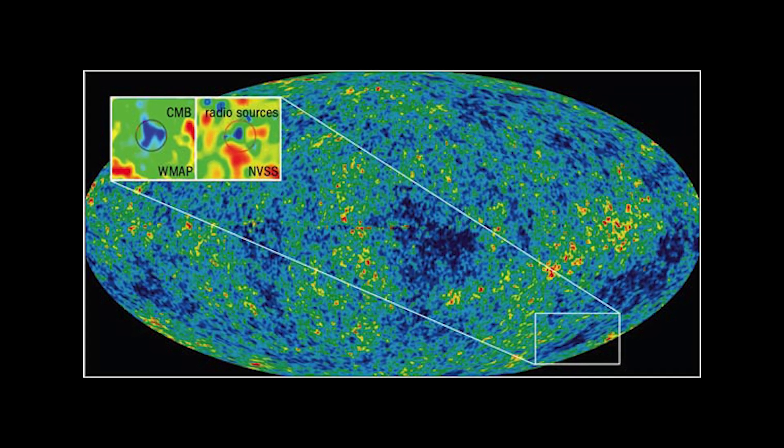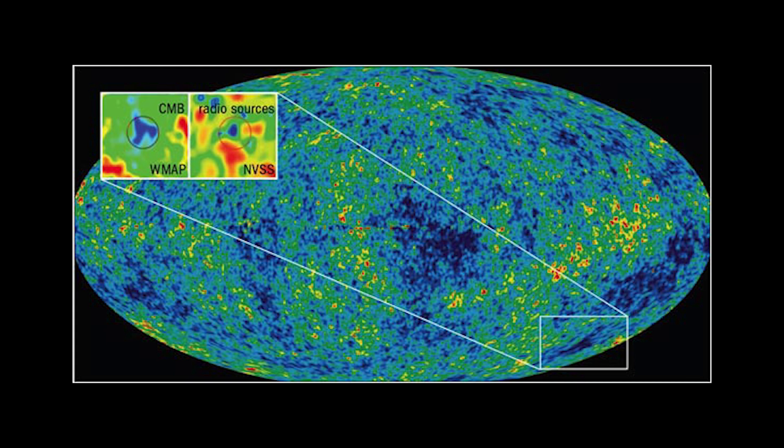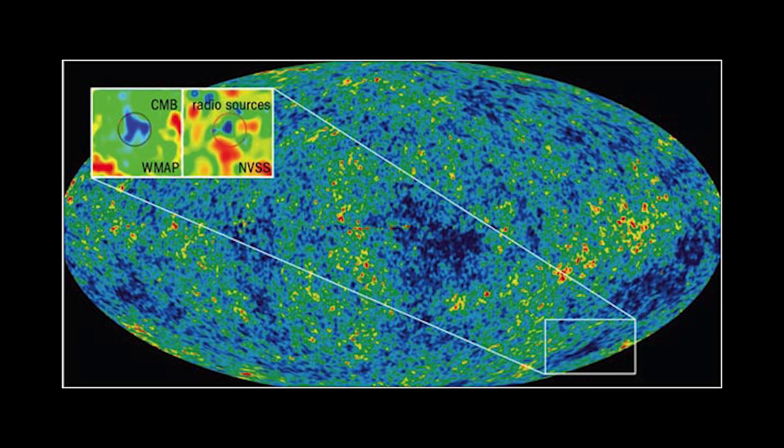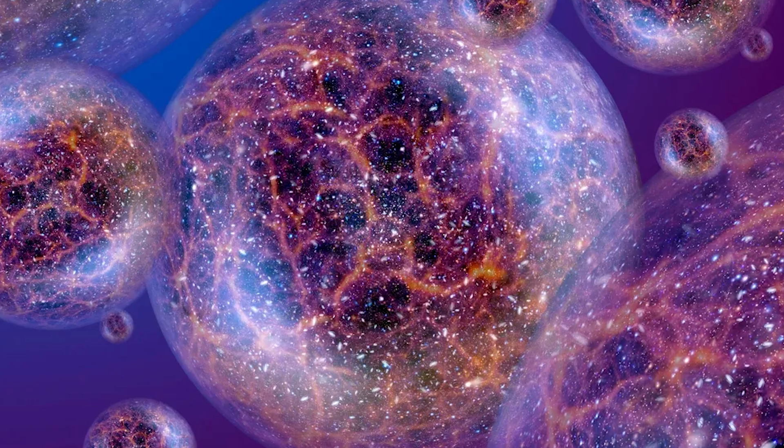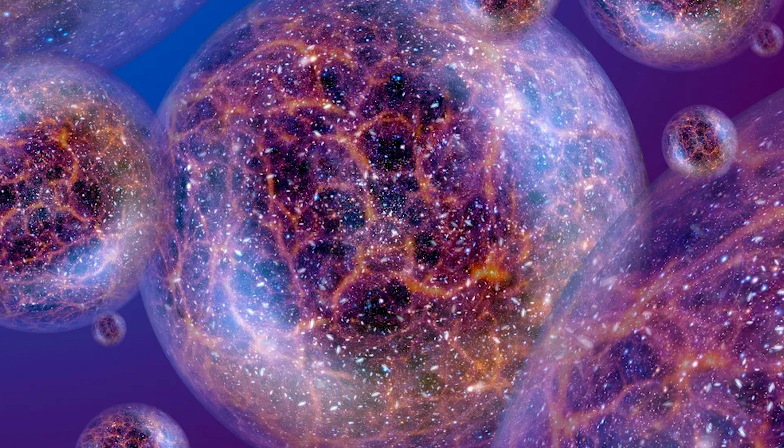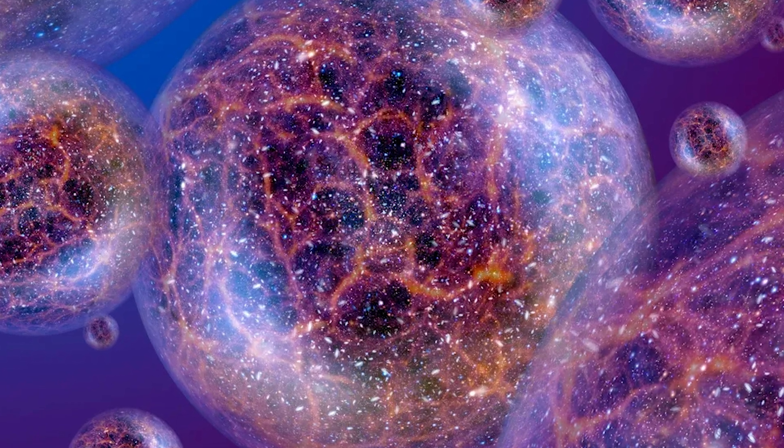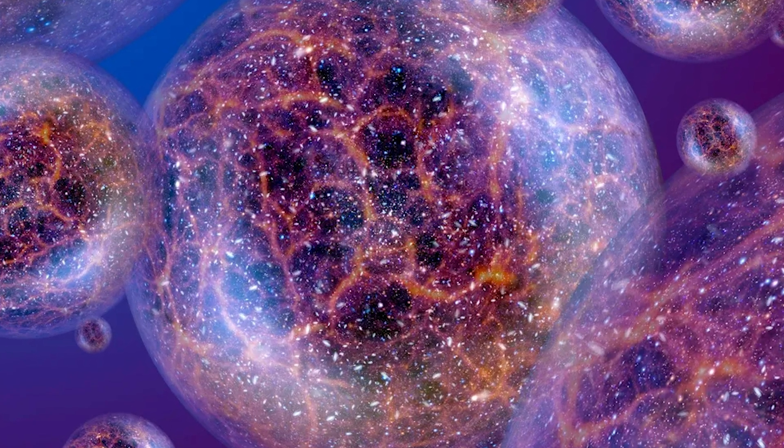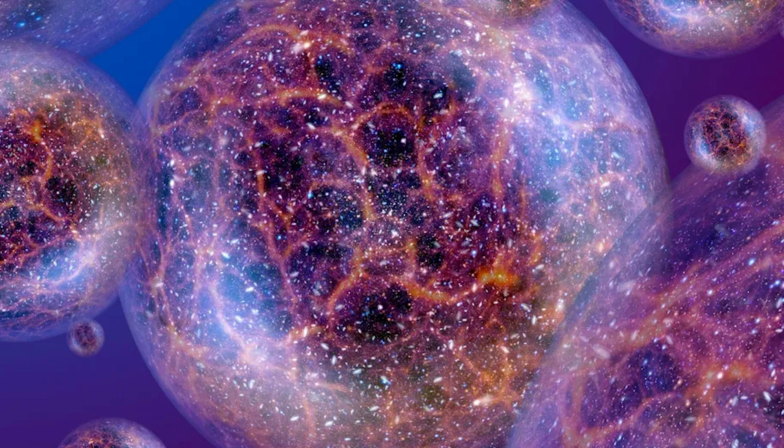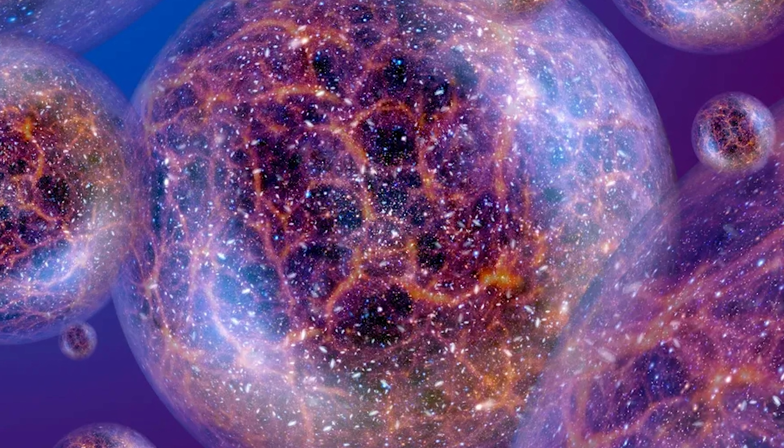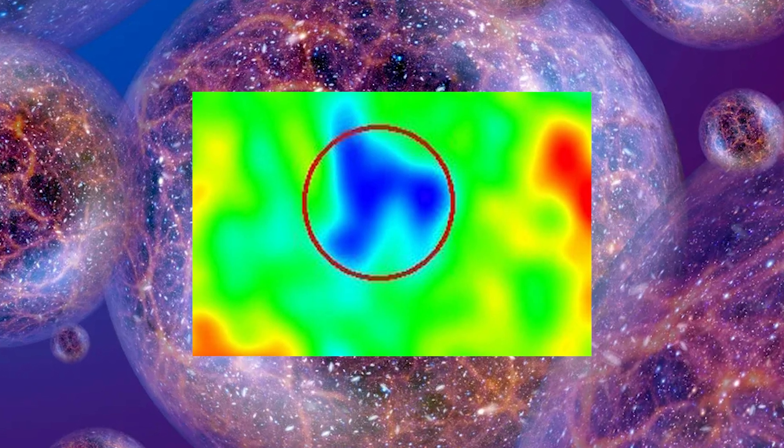But others have suggested something bolder. That the cold spot is actually a bruise, a scar. The aftershock of a collision between our universe and another. In multiverse models, these collisions are possible. Two bubbles of spacetime brushing against each other and leaving ripples, anomalies, strange patterns in the very fabric of our reality. And we might just be looking at one.